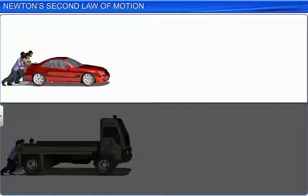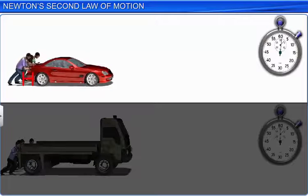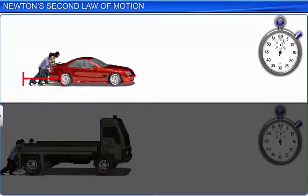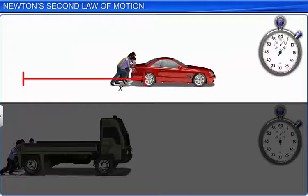Now, let us look at another example where the body is at rest initially, that is, it has zero momentum and by the application of a force for a certain time, it acquires some momentum. A small car is at rest. Four persons push the car for a certain length of time, at the end of which the car moves with a certain velocity.